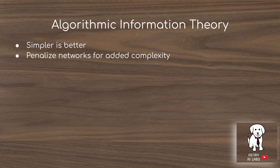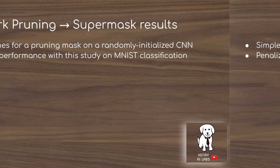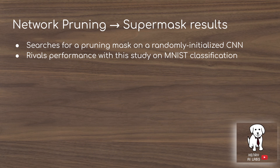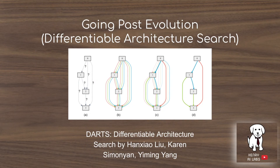Algorithmic information theory is another idea integrated into the design of the search space by penalizing networks for added complexity. Network pruning and the supermask is another interesting study that takes a randomly initialized convolutional neural network and searches for a pruning mask able to perform well on MNIST classification, rivaling the weight agnostic neural network. However, that approach is limited by its initial complexity, whereas the weight agnostic neural network is unbounded in what it can become. Future work could go beyond evolutionary search and use something like DARTS differential architecture search in the space of weight agnostic neural networks.